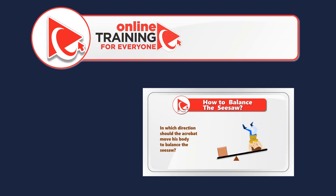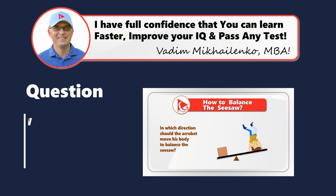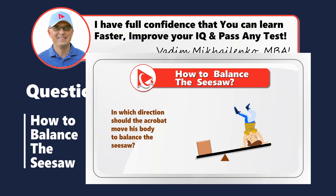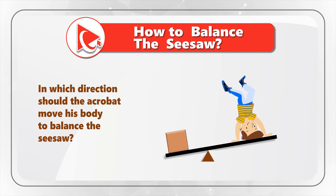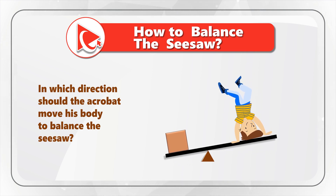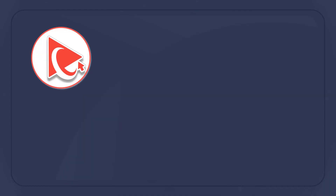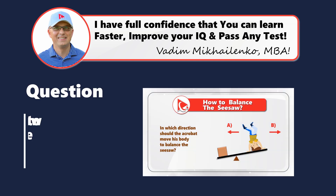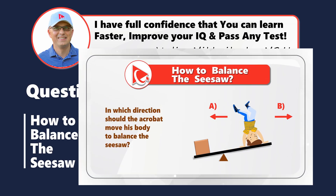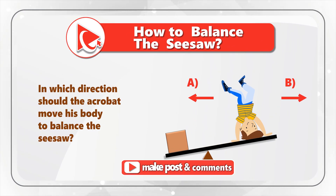I love this question because it truly tests your knowledge of mechanical engineering. You are presented with an acrobat and a weight on a seesaw. You need to determine in which direction the acrobat should move his body to balance the seesaw. You only have two choices: Choice A to the left, or Choice B to the right. I'm moving forward to share with you my version of the answer.